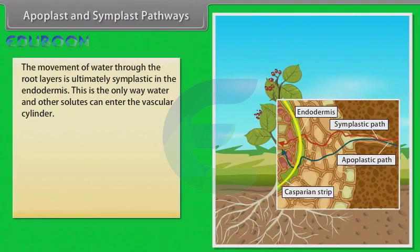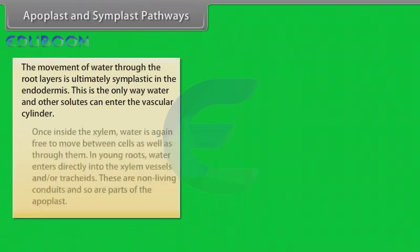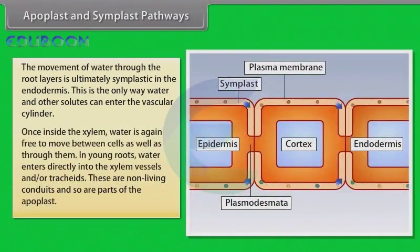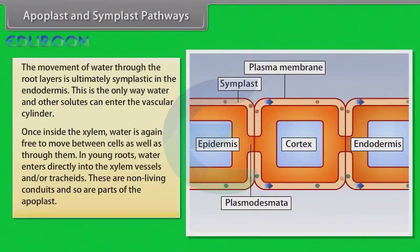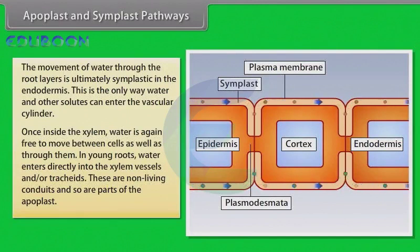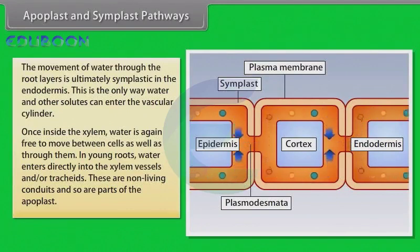This is the only way water and other solutes can enter the vascular cylinder. Once inside the xylem, water is again free to move between cells as well as through them. In young roots, water enters directly into the xylem vessels and/or tracheids. These are non-living conduits and so are parts of the apoplast.